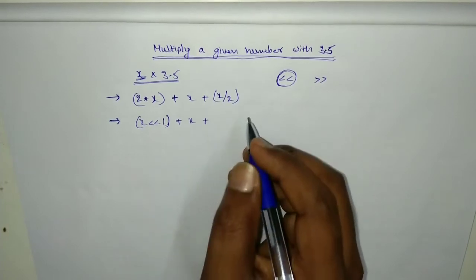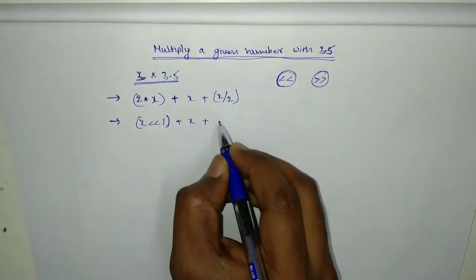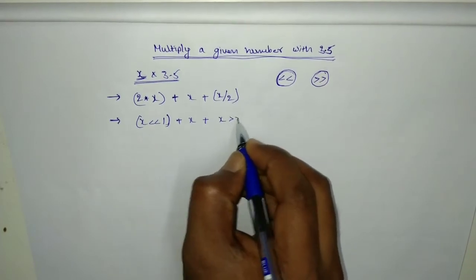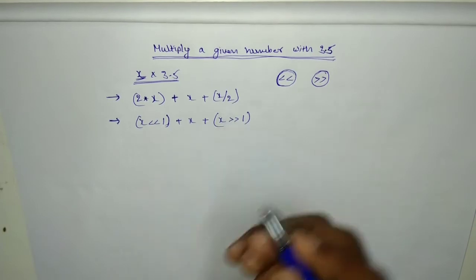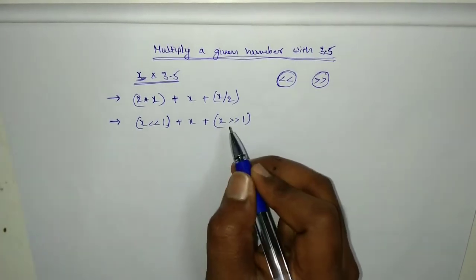So what operation can we perform to make a number half? That is the right shift operator. If you do x right shift once, then it will become x by 2.